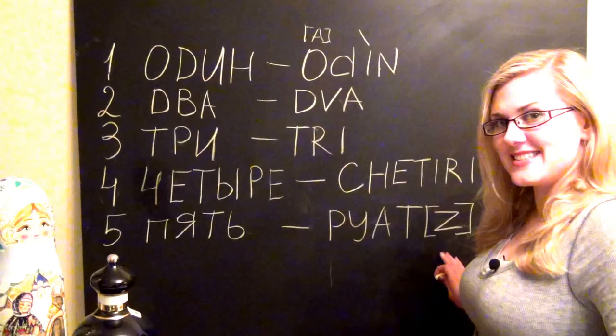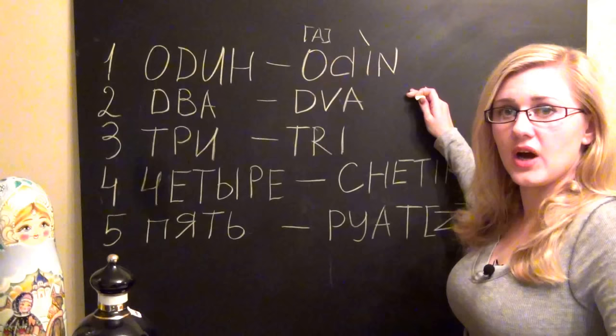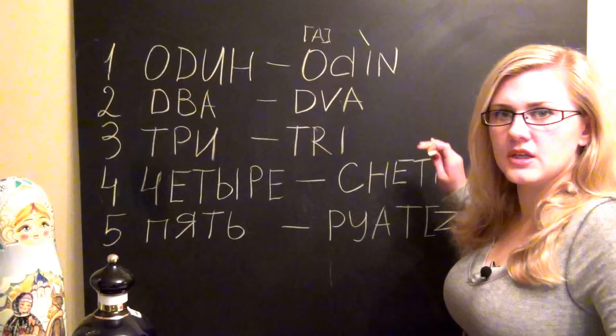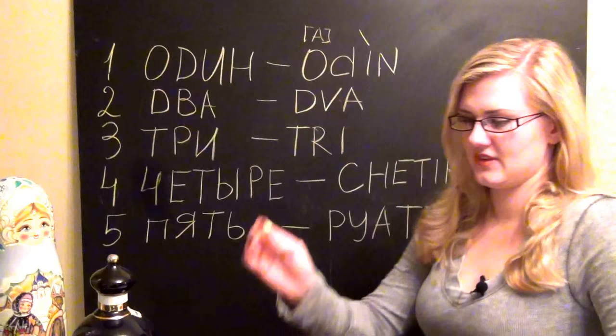Пять. Okay. And let's read it. Один, два, три, четыре, пять. Very good. Now we're going to go to the rest of the numbers.